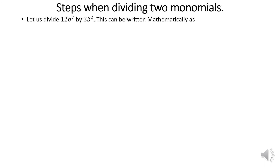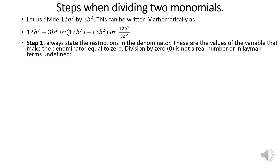Now let's look at steps to follow when dividing monomials. We are going to divide 12b⁷ by 3b². This can be written as 12b⁷ ÷ 3b², or (12b⁷) ÷ (3b²), or as a fraction. Step number 1: always state the restrictions of the denominator. We are dealing with variables that can take any value, but the denominator cannot equal 0.